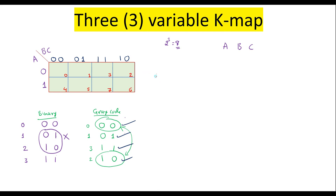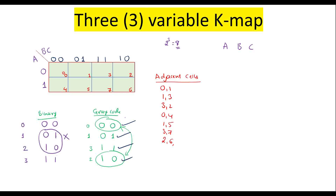So these are the cell numbers. Cells 0 and 1 are adjacent. Similarly, 1 and 3 are adjacent, 3 and 2 are adjacent, 0 and 4 are adjacent, 3 and 7 are adjacent, and 2 and 6 are adjacent. Cells 2 and 0 are also adjacent because there is a 1-bit difference between 0 0 0 and 0 1 0.